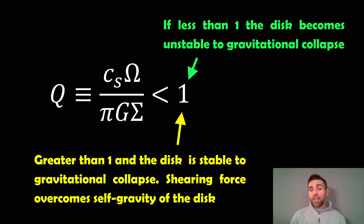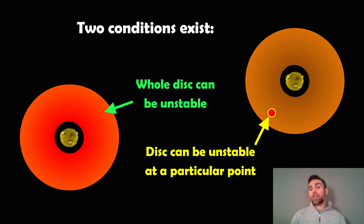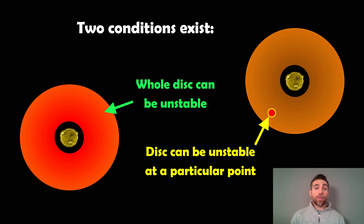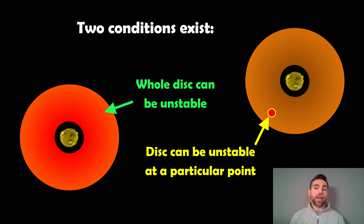If Q is greater than one, the disk is stable to gravitational collapse — the shearing force overcomes self-gravity, and this generally occurs quite close to the star. There could be two conditions in a disk: either the whole disk is unstable, leading to lots of gravitational instabilities rather than a single fragmentation, or the disk is unstable only at a particular point, giving a localized collapse. That's probably more applicable for creating one or two giant planets further out in the disk.